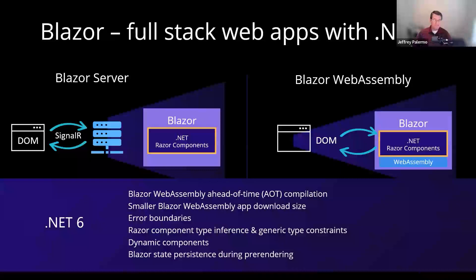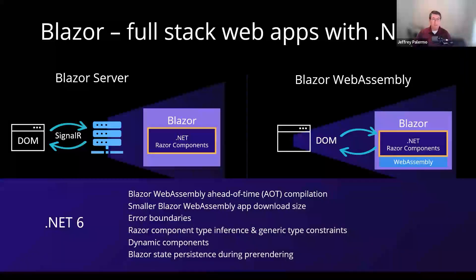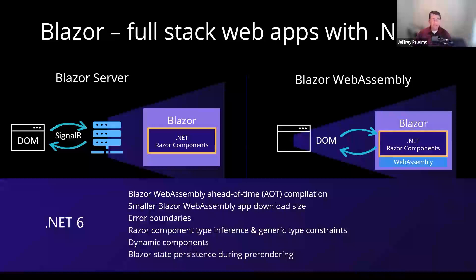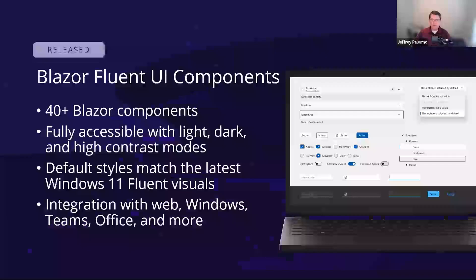.NET 6 had some enhancements over .NET 5 that make it faster and things like that, but it's really about .NET 6 providing the canonical version 3 of Blazor. We jumped on Blazor when it was still in .NET Core, and there were definitely bleeding-edge elements. Then came the enhancements for .NET 5, and then .NET 6 gives you the full version 3 of Blazor. It really is compelling at this point.